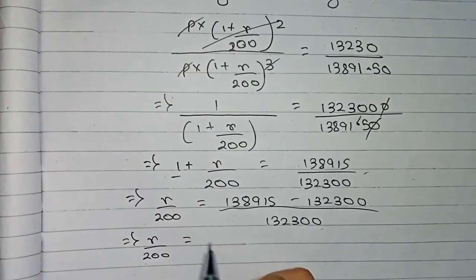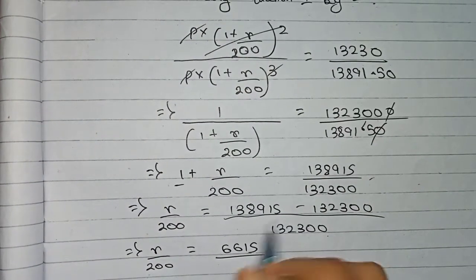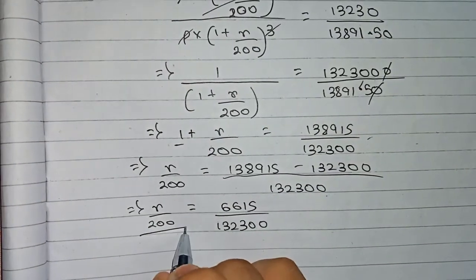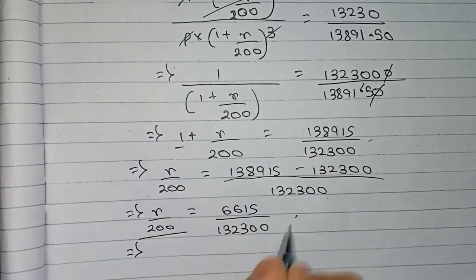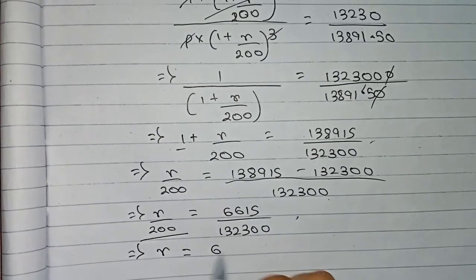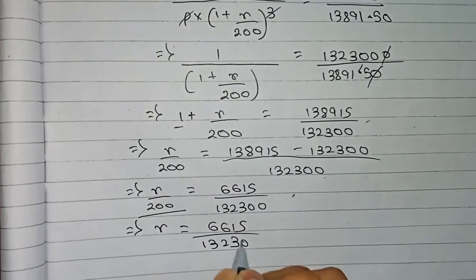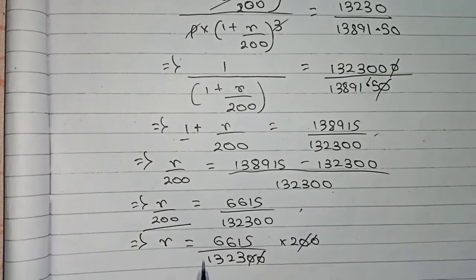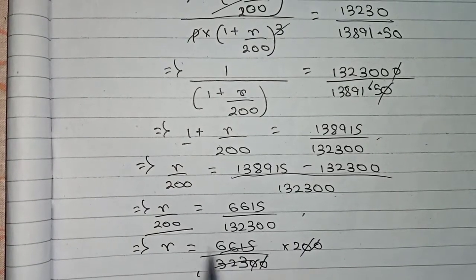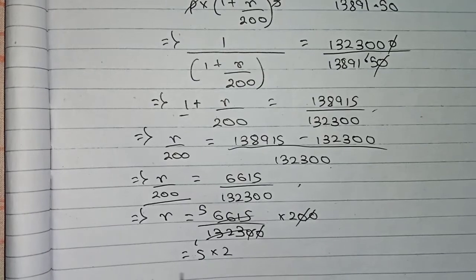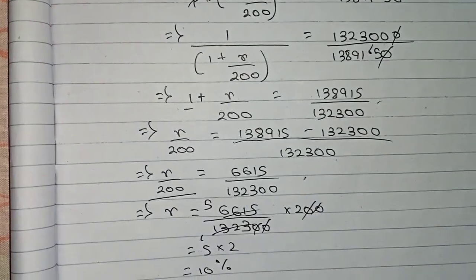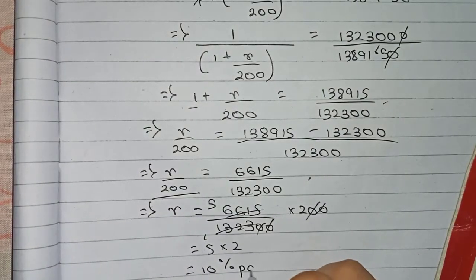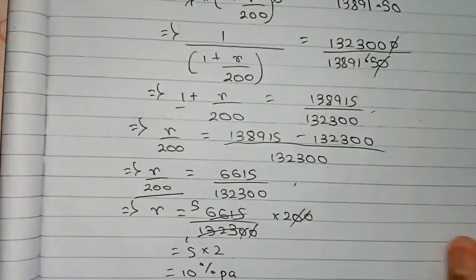So r by 200 equals 6,615 by 1,323,000. Taking 200 to the other side for multiplication: r equals 6,615 by 1,323,000 into 200. Cancelling zeros and simplifying — 1,323 cuts down to give 5, and 5 into 10 equals 50... so the rate of interest equals 10 percent per annum.